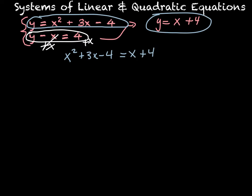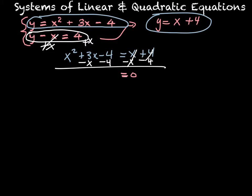So I'm going to set x squared plus 3x minus 4 equal to x plus 4, and then work on solving. I'm going to try to set it equal to 0, so I'm going to subtract the 4 and subtract the x from both sides. That cancels those out to 0, leaving me with negative 4 minus 4, which is negative 8, and 3 minus 1x, which is a positive 2x, and then x squared.